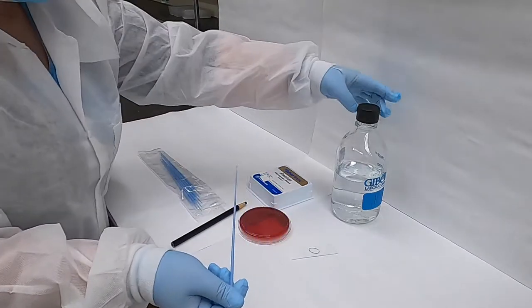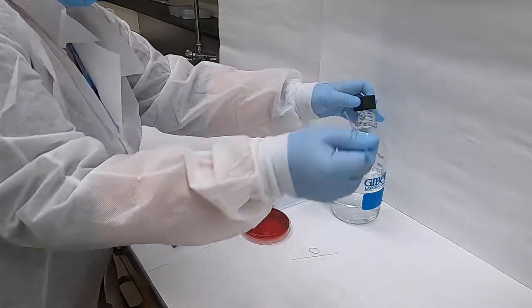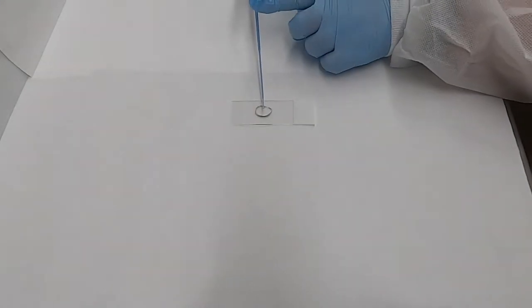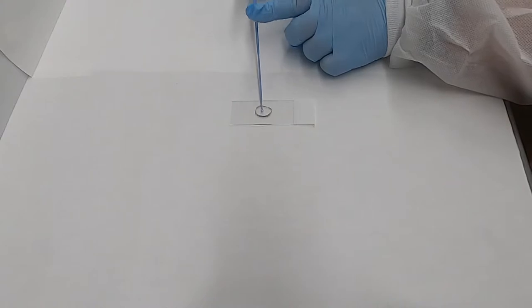Use a calibrated loop to collect a small amount of water which we're going to deposit into that circle by gently tapping the loop.